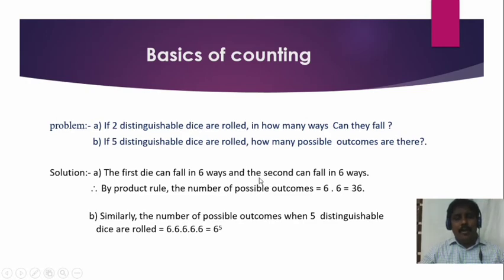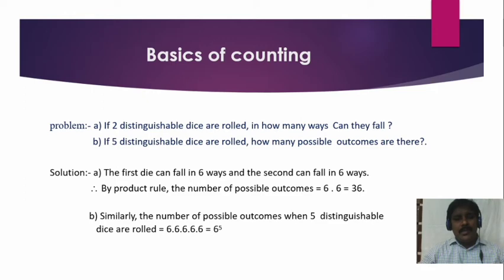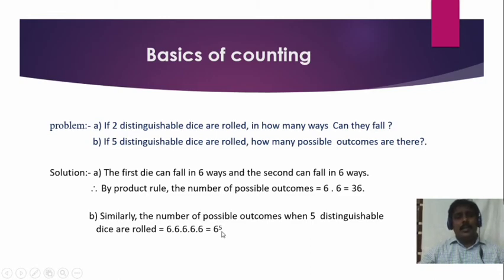Each die falls in 6 ways, so by the product rule 6 into 6 equals 36. Next problem: if 5 distinguishable dice are rolled, the formula for dice is 6 power n where n is the number of dice. So 5 dice gives 6 power 5. The number of possible outcomes is 6 power 5.